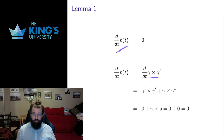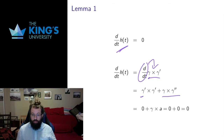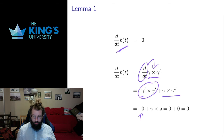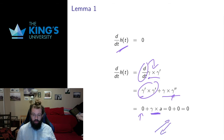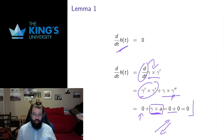H was defined to be gamma cross gamma prime. The derivative of a cross product follows the product rule: the derivative of the first cross the second, plus the first cross the derivative of the second. Anything cross itself is zero, so the first term vanishes. The second derivative of position is acceleration, and the direction of gamma and the acceleration due to gravity are exactly opposite — they're on the same line — so their cross product is also zero. Therefore H prime equals zero: H never changes.